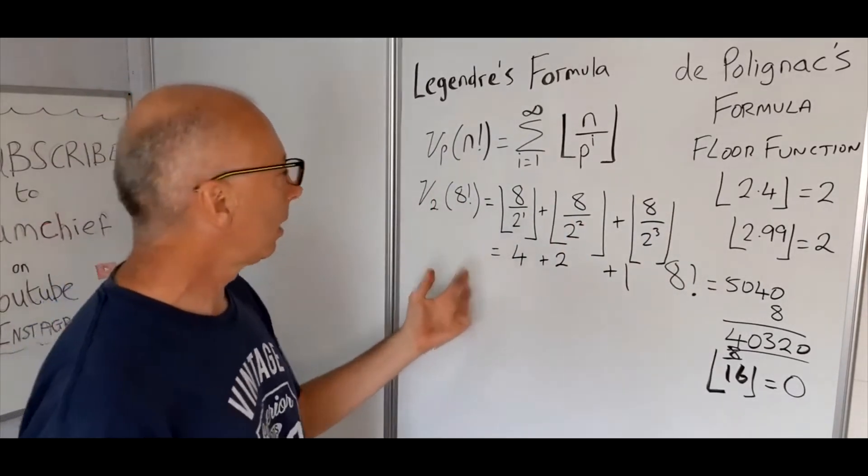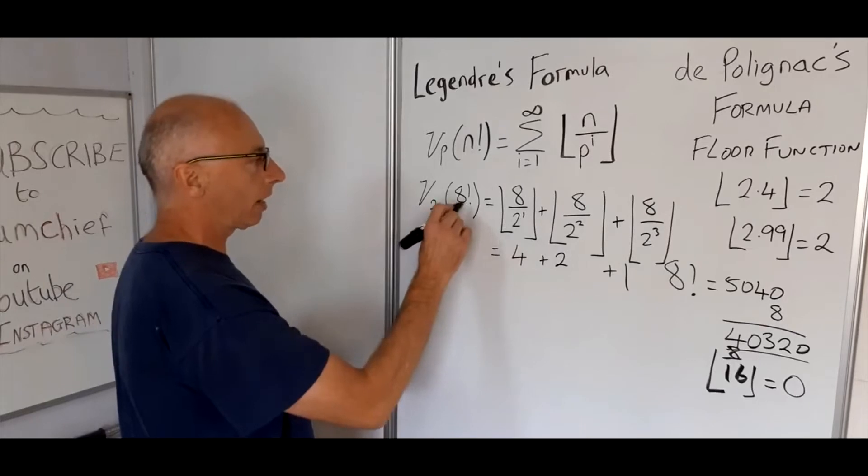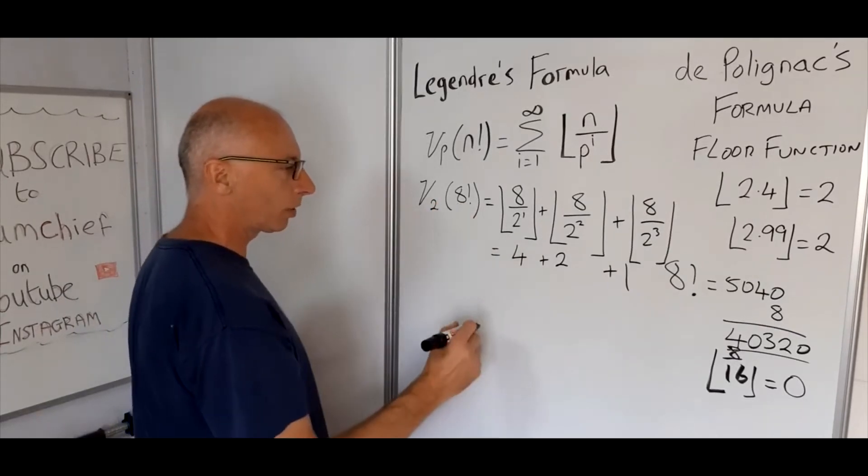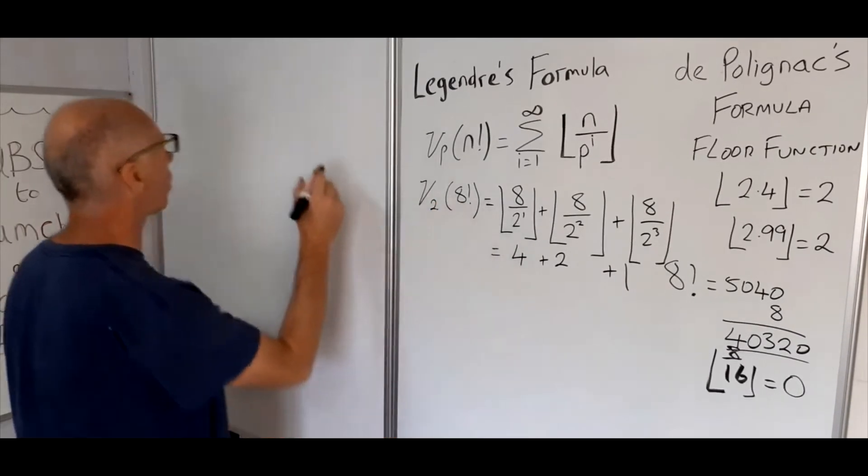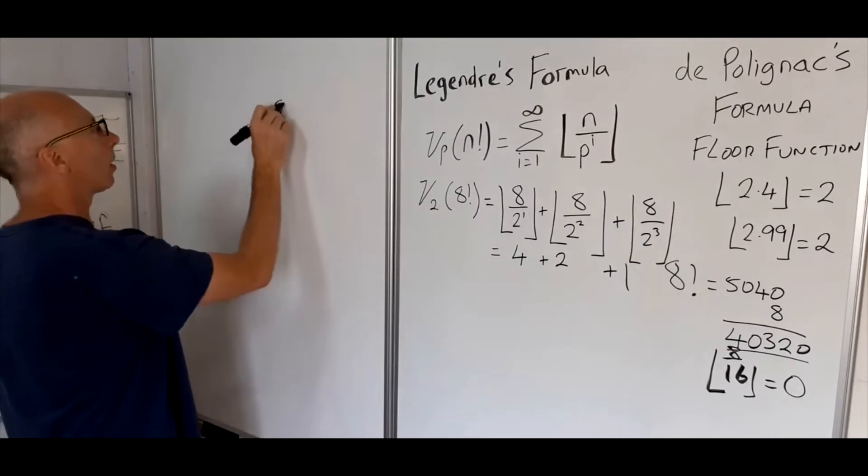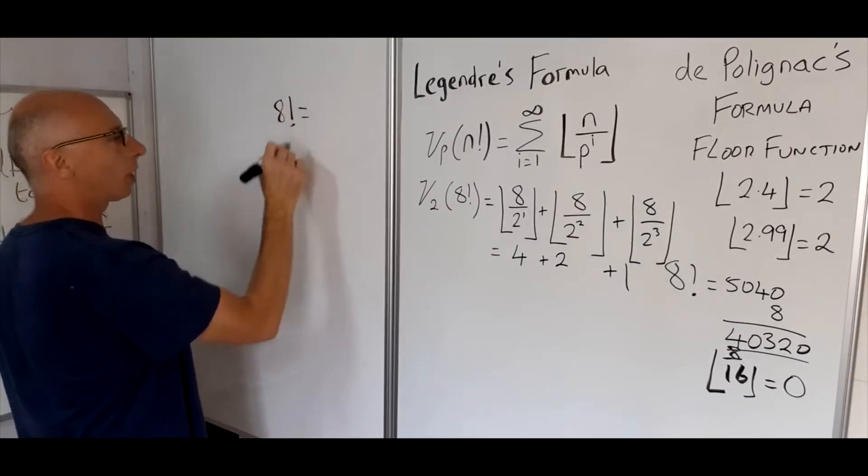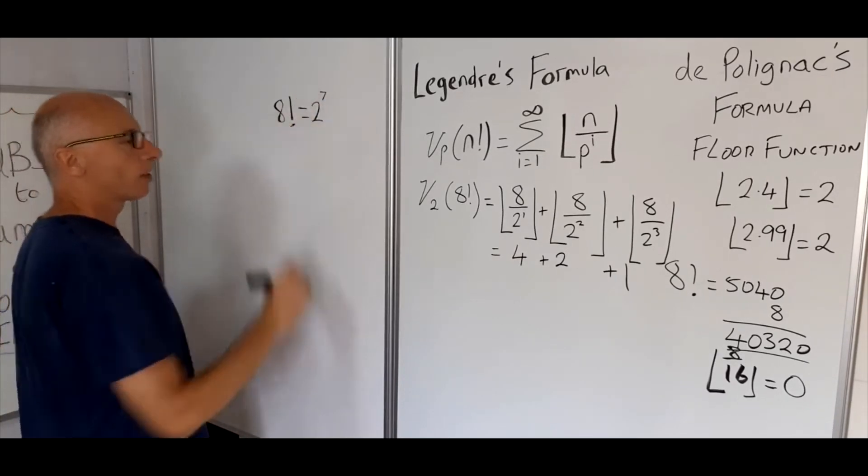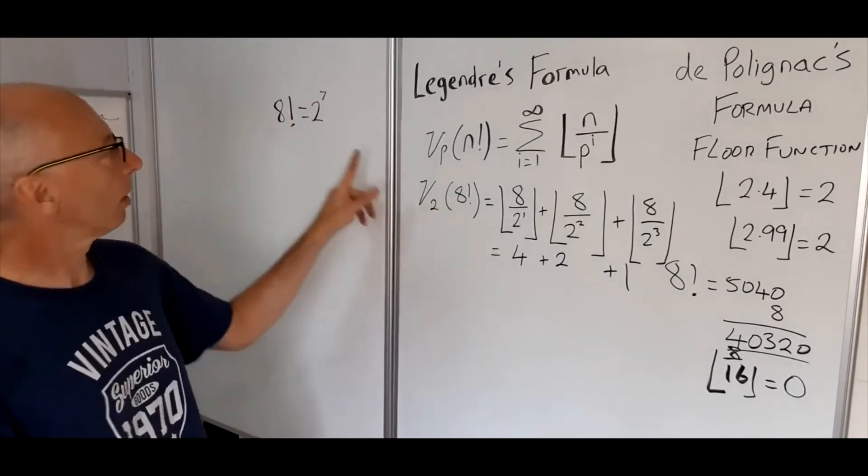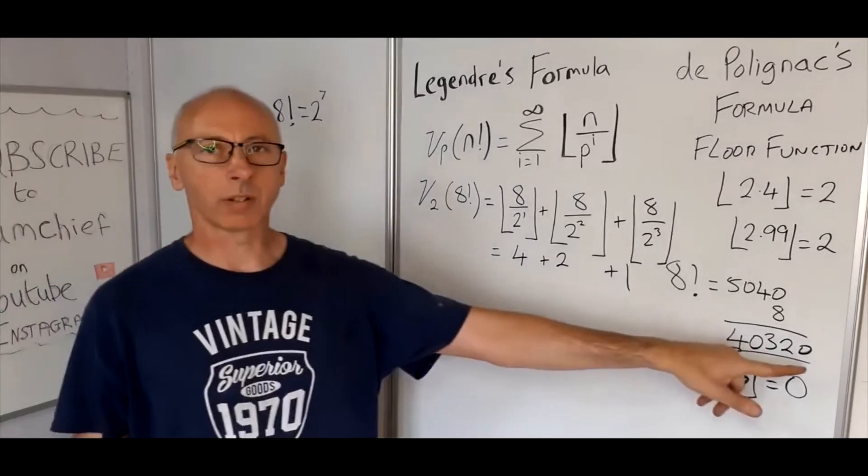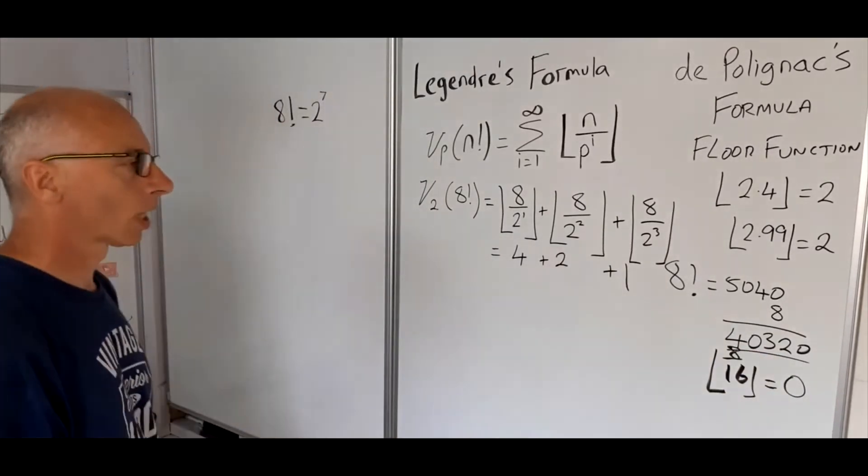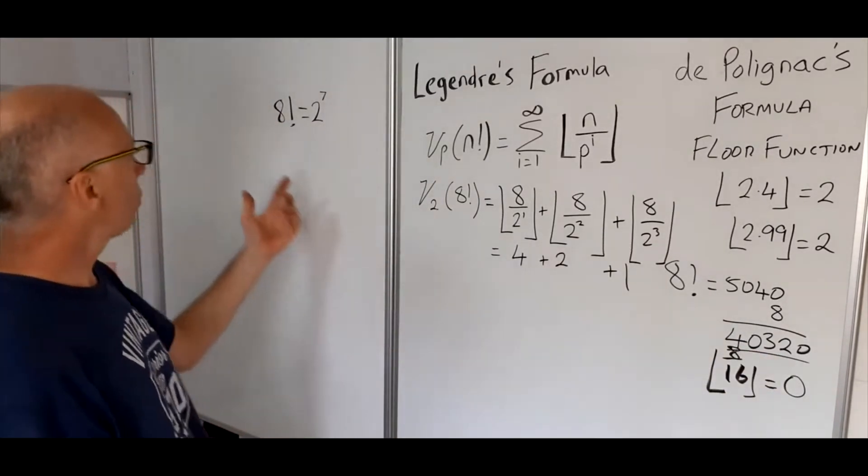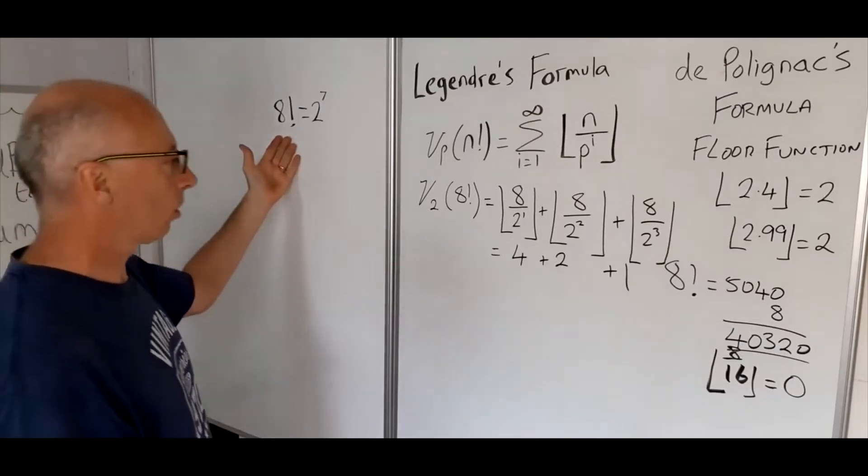So basically what it's telling us now is that 8 factorial, part of the prime factors, let's just write that on this board here. So 8 factorial prime factorization, 2 will appear 7 times in the factorization of 40,320. Okay, why don't we just try for all of the factors of 8, all of the prime factors.